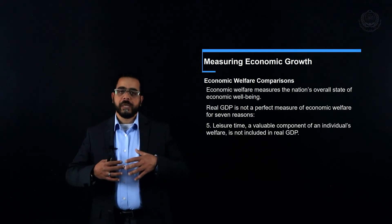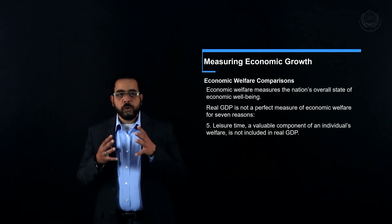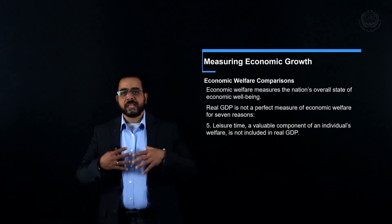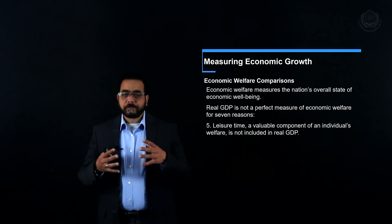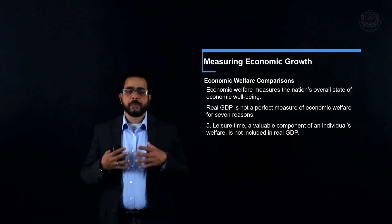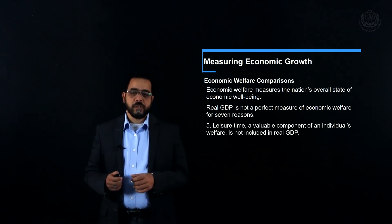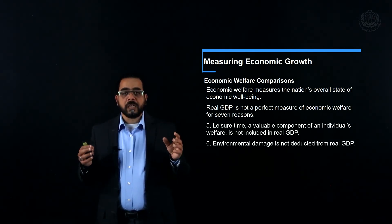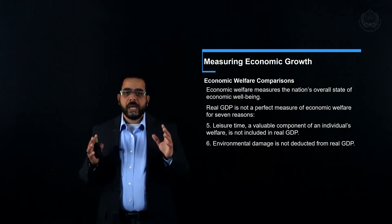The fifth defect is leisure time — how much free time do you have to pursue hobbies and meet friends? In some countries GDP may be very high, but it comes at the expense of very long working hours. This doesn't tell us about our standards of living, because leisure time is part of our enjoyment of life and is not included in GDP.